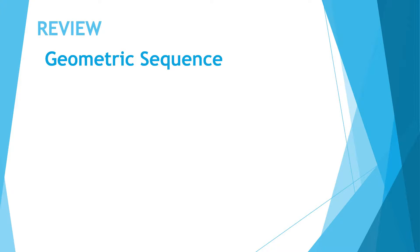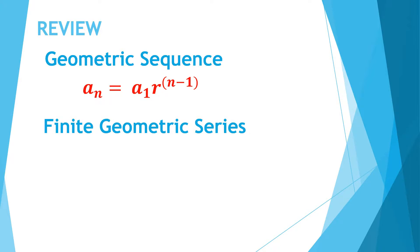First is the formula for geometric sequence, which is a_n = a_1 × r^(n−1). This formula is used to find a missing term in a geometric sequence. Then we have the finite geometric series formula: S_n = a_1 × (1 − r^n) / (1 − r), which you use if you are looking for a finite geometric series given the number of terms.